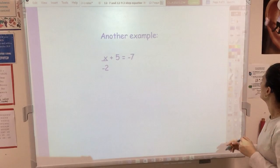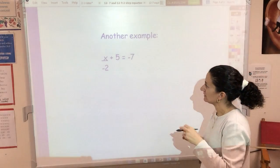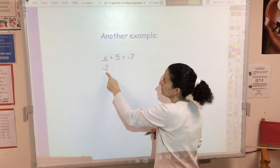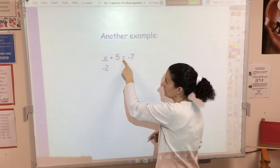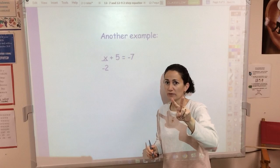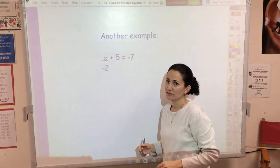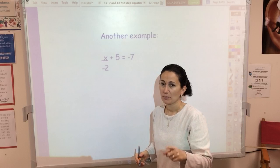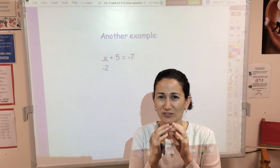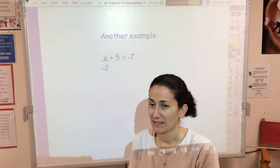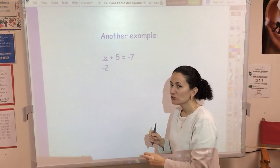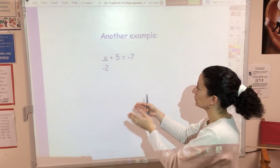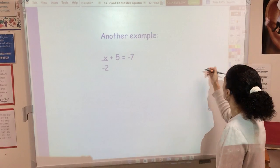I'm not as concerned with the answer as I am with whether you understand the work. Let me show you another example. In this one we see two operations again — X is being divided by negative 2 and it's adding 5. To undo this I'll do the opposite of adding 5 (subtract 5) and the opposite of dividing by negative 2 (multiply by negative 2). But which do I do first? The subtracting — because when undoing PEMDAS we undo addition and subtraction first.